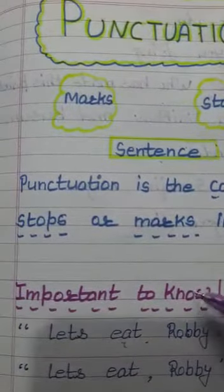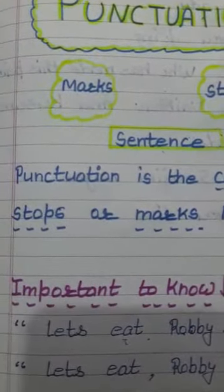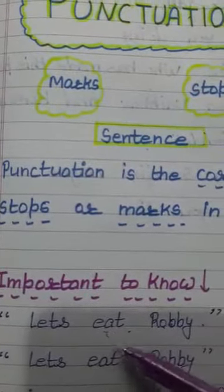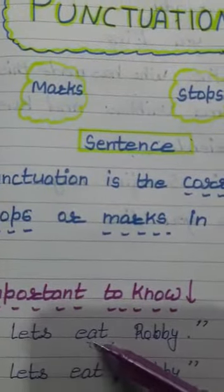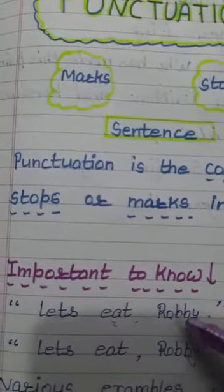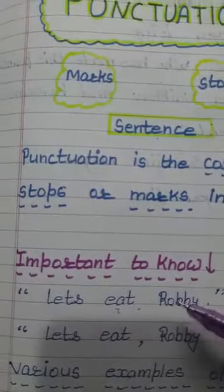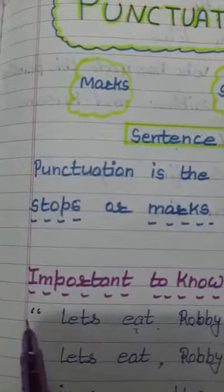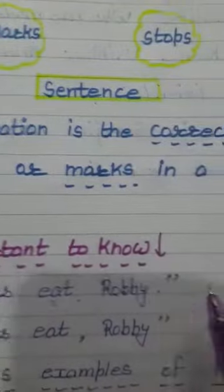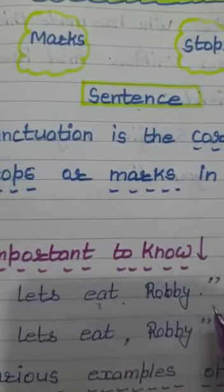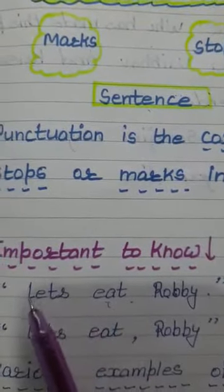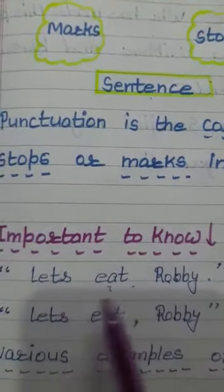Here we are having something very important to know. Let us go through both the sentences one by one. At very first place we are having 'Let's eat Robbie.' Now Robbie is the name of a person — look what we are saying: 'Let's eat Robbie.' You will see that the sentence is ending with a full stop, but is this sentence giving a sense? Let's eat Robbie — no.